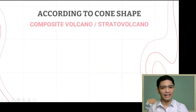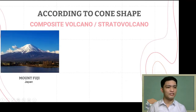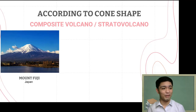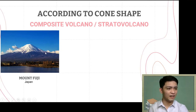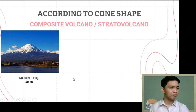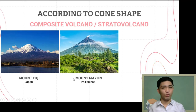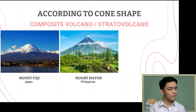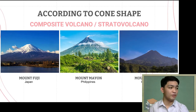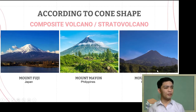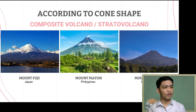Composite volcanoes are among the most famous because of their symmetrical sides. Examples include Mount Fuji in Japan — very high with almost symmetrical and steep slopes — our very own Mount Mayon with its almost perfect cone shape, and Mount Merapi in Indonesia. These are just a few examples of composite or strato volcanoes.